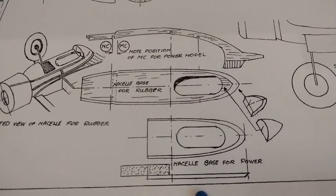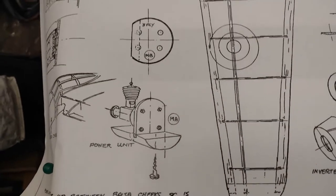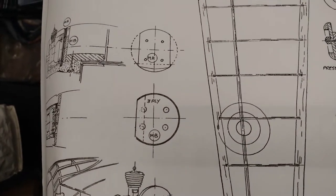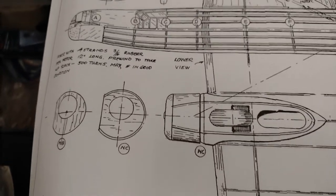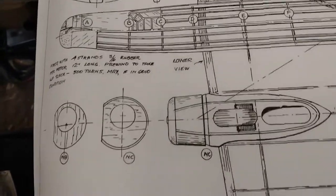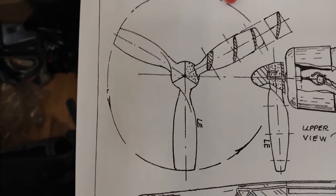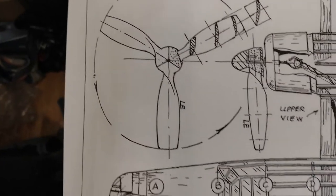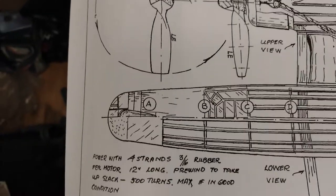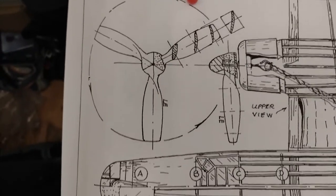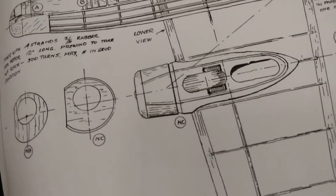As you can see, it's all balsa build, so it's going to be the typical construction of balsa and tissue covering. The propellers are designed to be three-bladed handcraft propellers, which looks very nice if I can actually make them happen, which I'm not sure I would be able to.